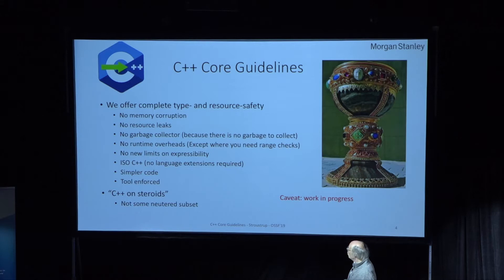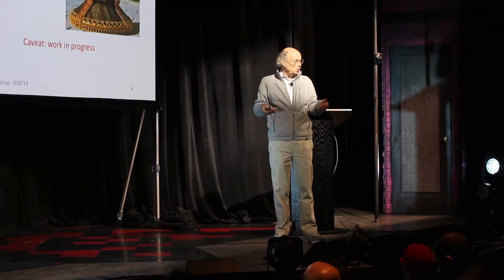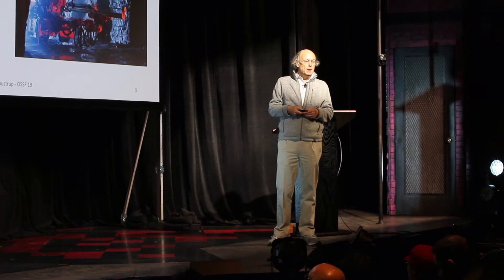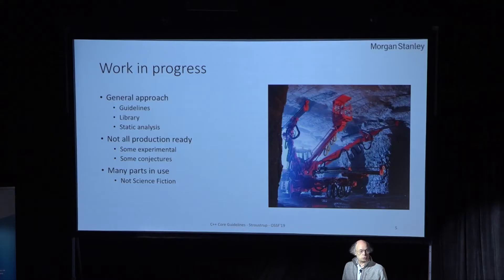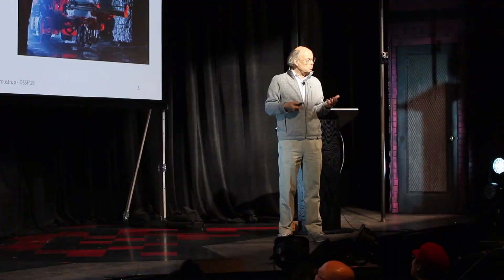If you look at that list, it's one of the holy grails of computing and programming — hence the illustration. Basically, we want C++ on steroids, not a nutrient subset. And it's work in progress. We have a general approach: a set of guidelines, a support library, and some static analysis tools that help you enforce the rules. It's not production-ready — some is experimental, some is mere conjecture. But it is being used in production in various places for million-line code bases, so it's not science fiction.